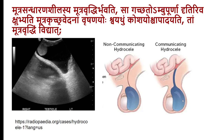A communicating hydrocele is a structural defect where the processus vaginalis fails to get fully blocked, allowing fluid accumulation. Sushruta refers to the fluid as 'Moutra,' though it is not actually urine — it is dosha vitiation-induced fluid. The missing link is whether suppression of micturition truly induces abnormal fluid exchange — a question not yet answered.